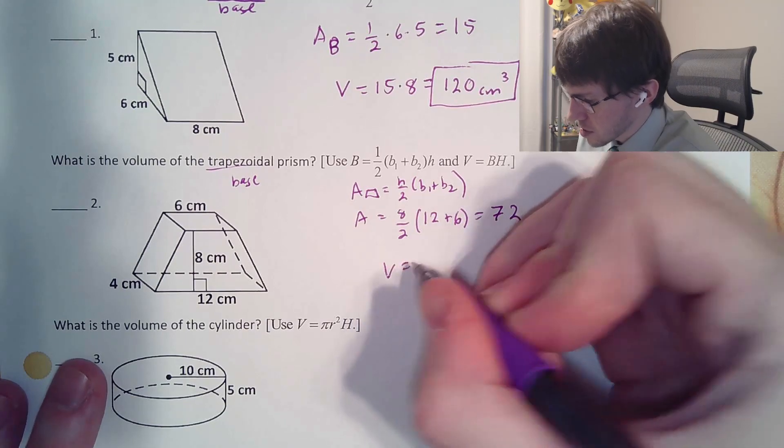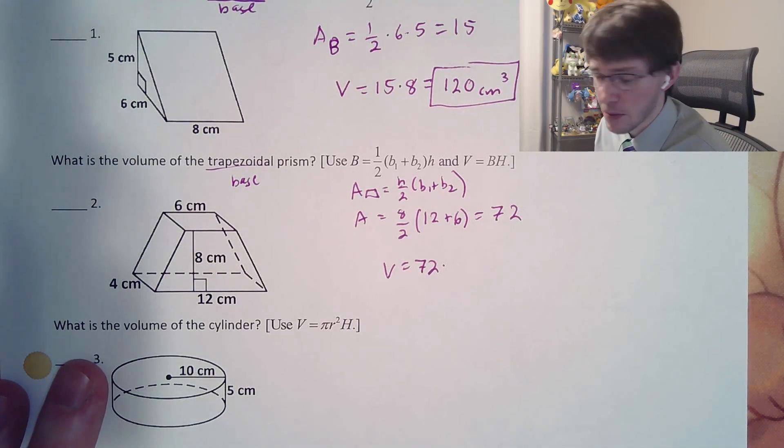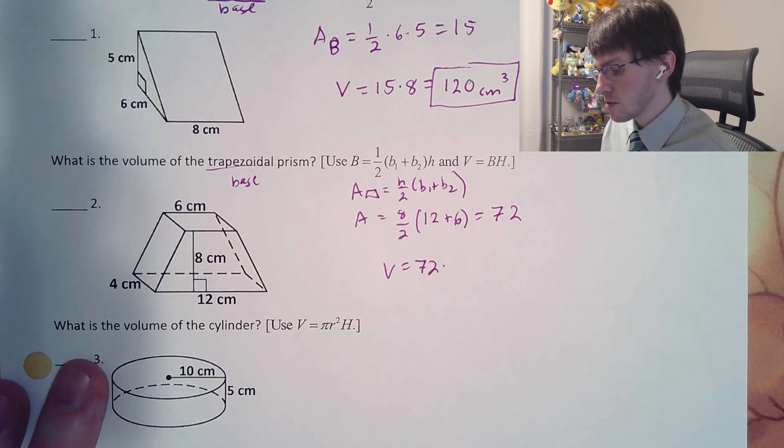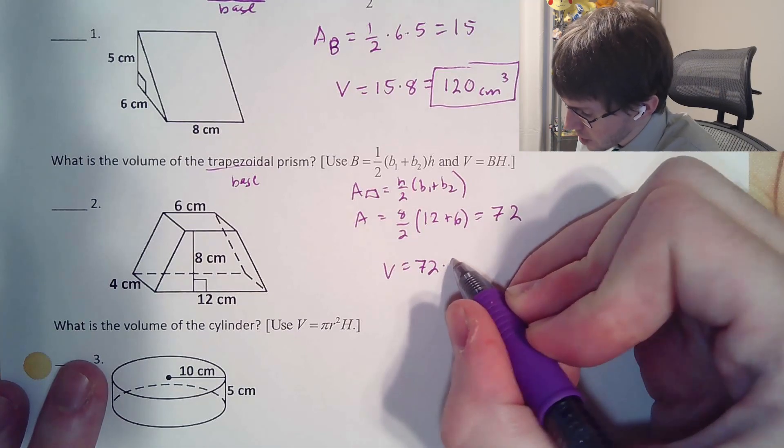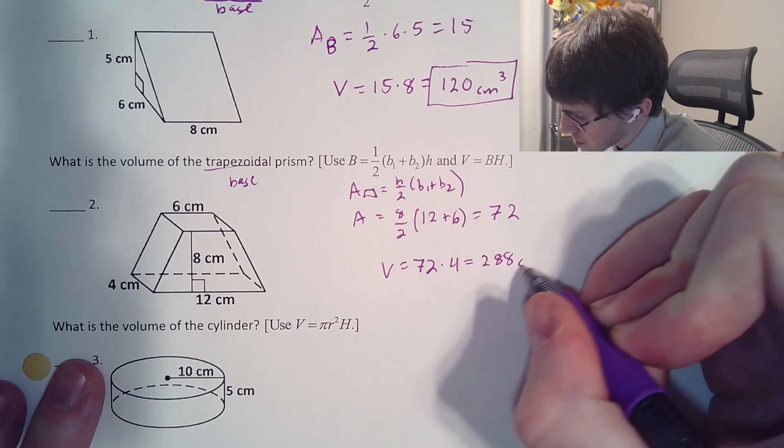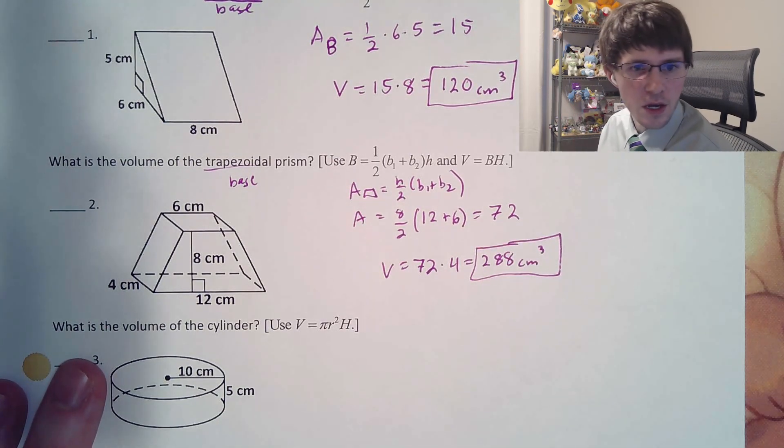And then now our volume is going to be 72 multiplied by the area of the base, multiplied by the height of the solid. Again, it's the part of the solid that goes all the way through. In this problem, it's the only number that hasn't been used yet, that number 4. 72 times 4 is going to be 288 with our centimeters cubed. Nice.